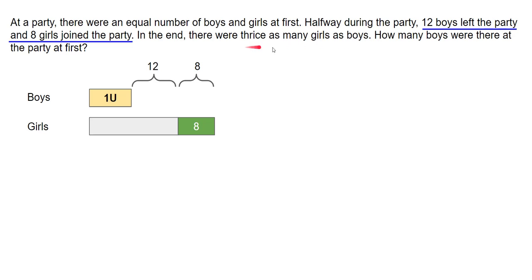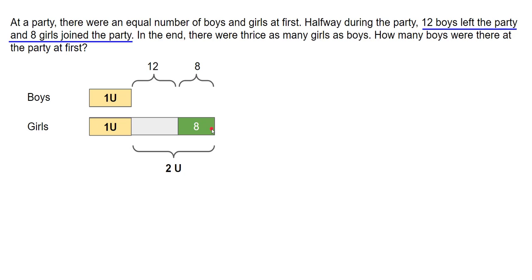At the end, the number of girls was three times the number of boys. If we assume the remaining boys represent one unit, then girls should have three units. So the girls' bar should be three units total. Since the boys are one unit, the remaining two units in the girls' bar must come from the 12 plus 8 students. Therefore, two units equals 12 plus 8, which equals 20.